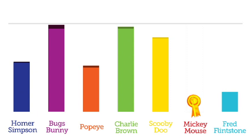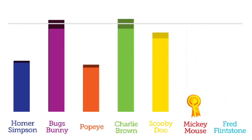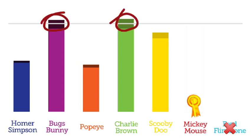As no other candidates have reached the quota, the next stage takes the least popular candidate, poor old Freddie Flintstone, and they get eliminated. The votes get redistributed based on second choice preference. So in that time we can see that both Charlie Brown and Bugs Bunny have gained enough first and second choice votes to reach their quotas.